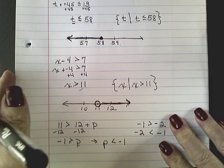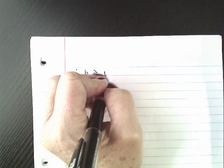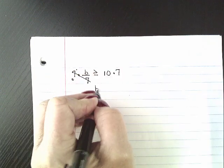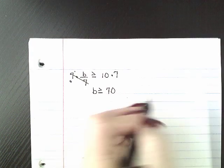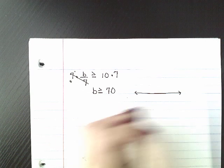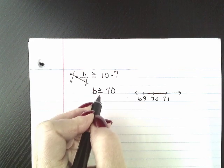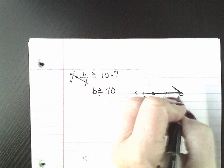Now we're going to do a couple involving multiplying and dividing — these become a little trickier. We graph everything the same way. If I have b over 7 is greater than or equal to 10, I multiply both sides by 7 and get b is greater than or equal to 70. On the number line, 70 is the anchor point with 69 before and 71 after. It's greater than or equal to, so it's a closed circle, and since it's greater than, we shade to the right.